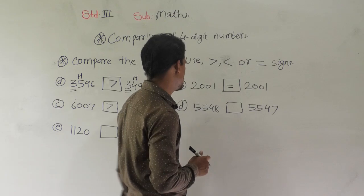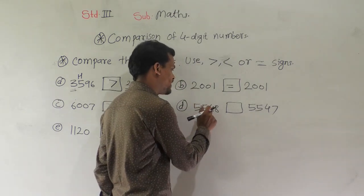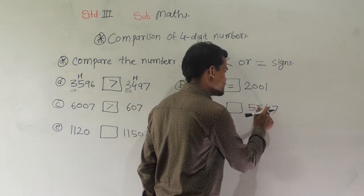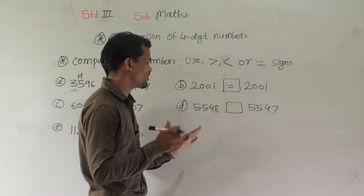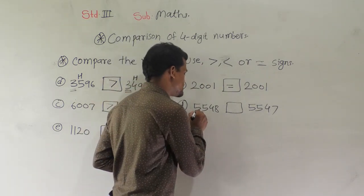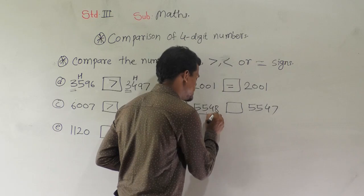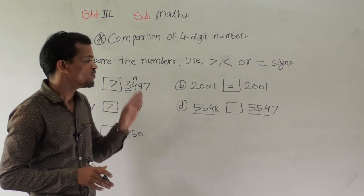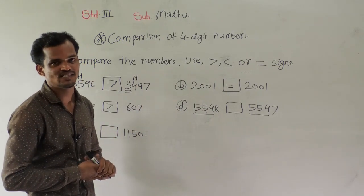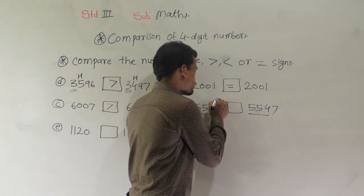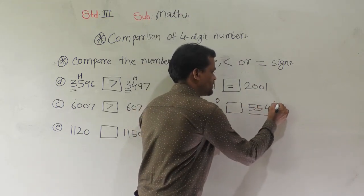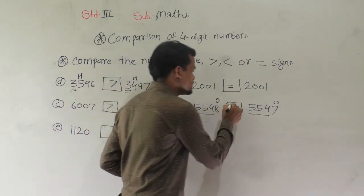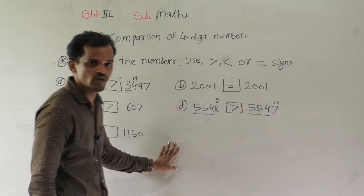Next example: 5548 and then 5547. We can observe here the thousands digit, hundreds digit, and tens digits are the same in both numbers. So we have to compare the ones digit. Here at the ones place 8 is there and here 7 is there. So 8 is greater than 7, so we will use this sign.